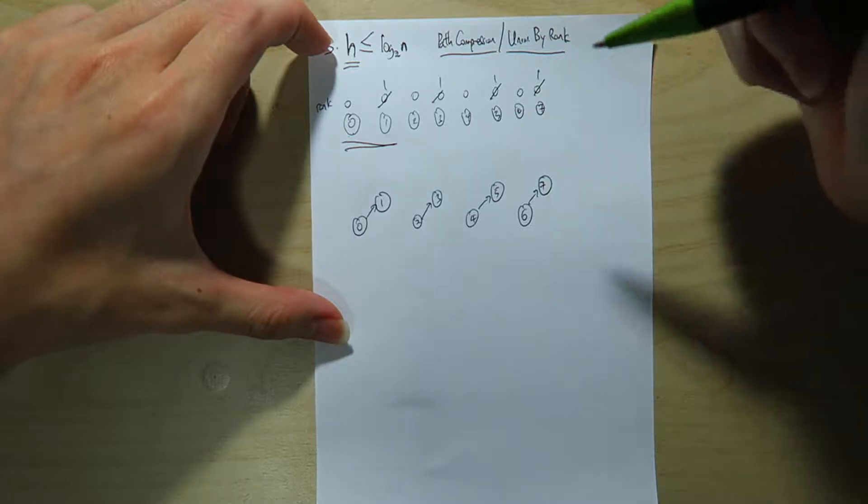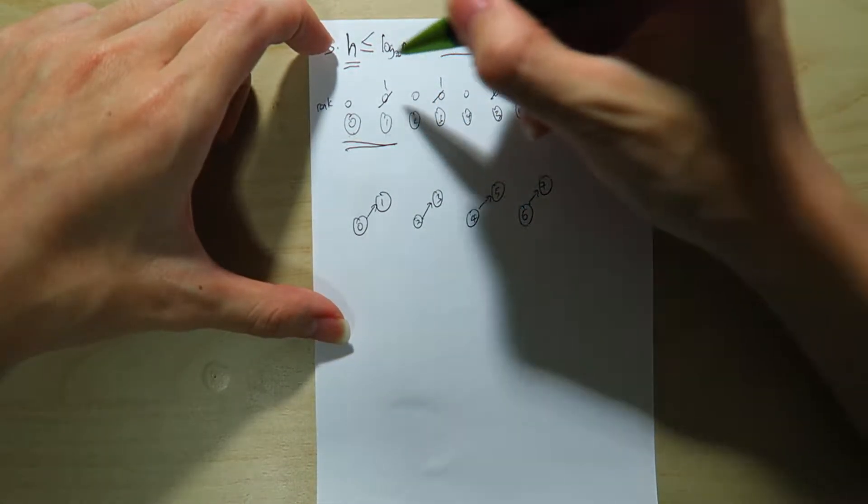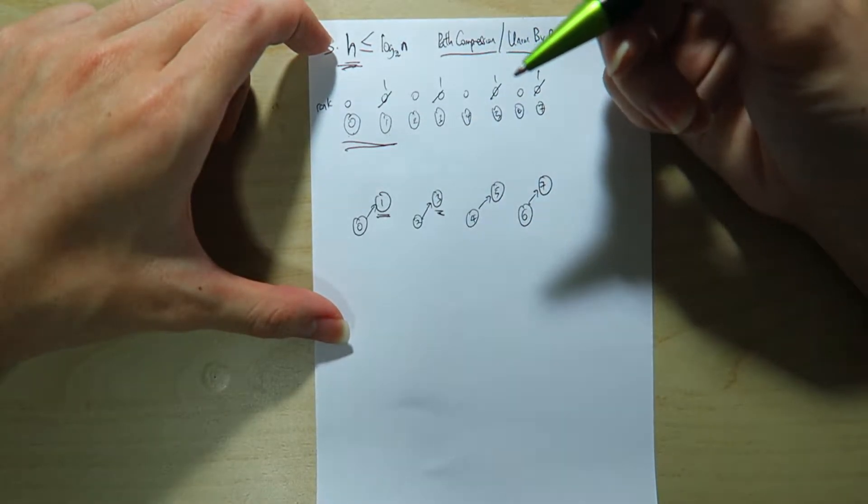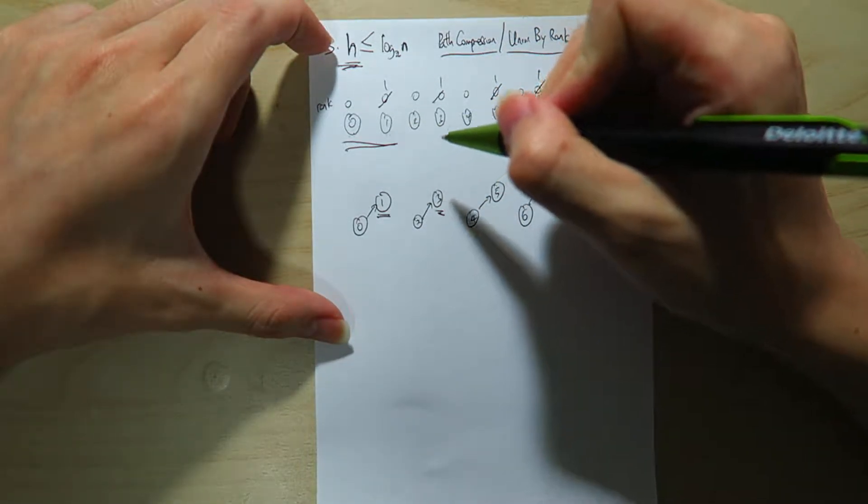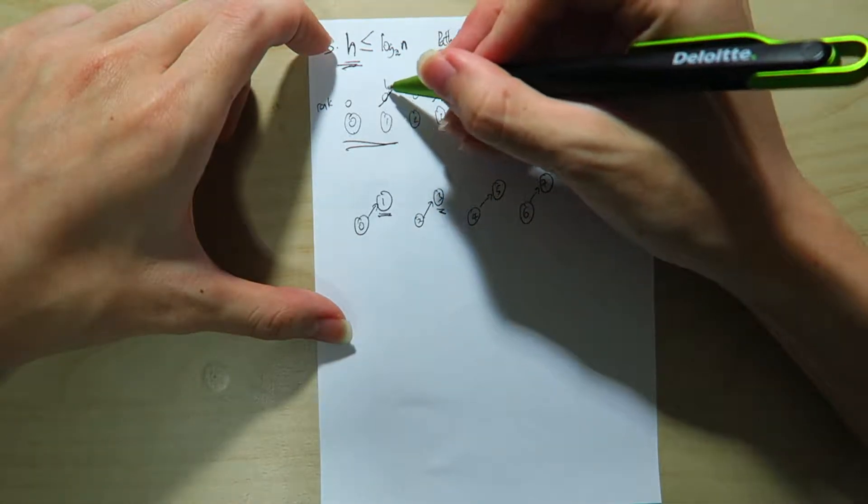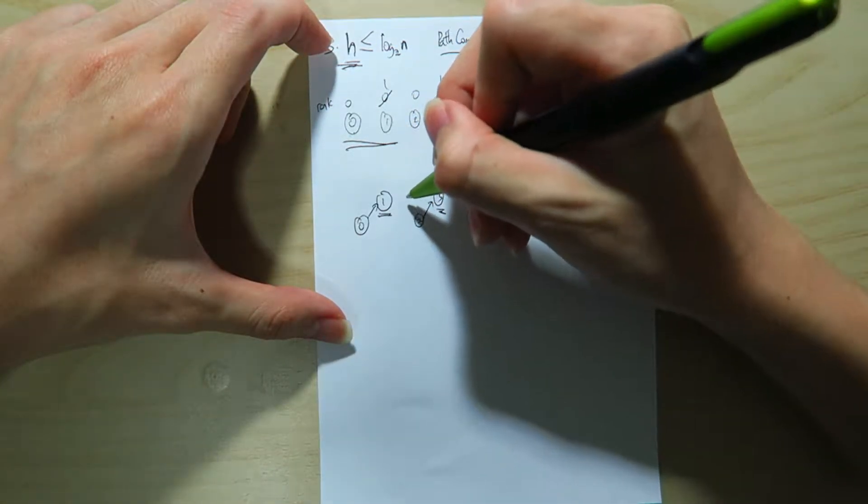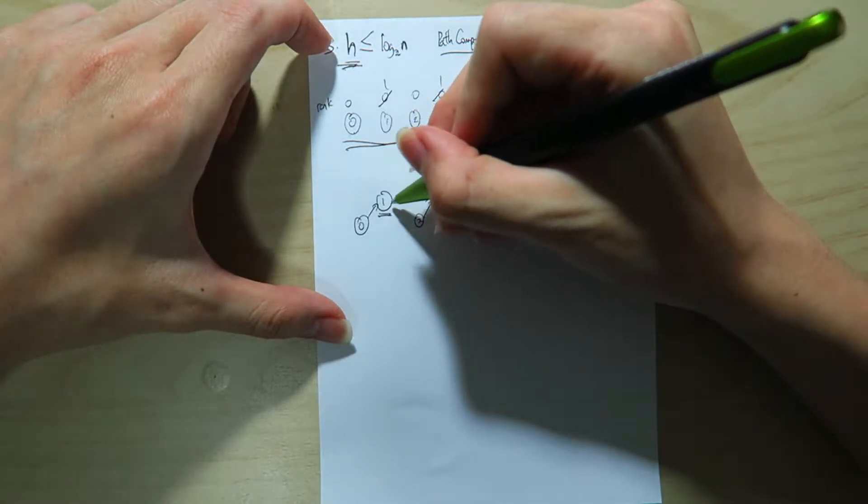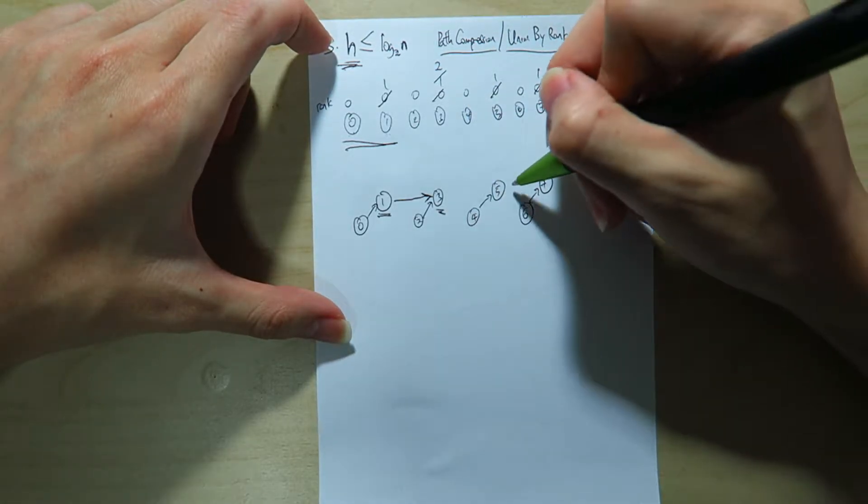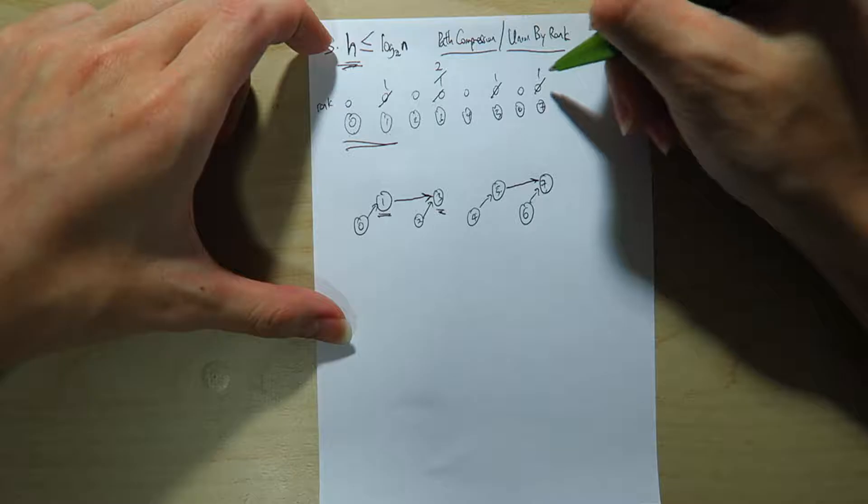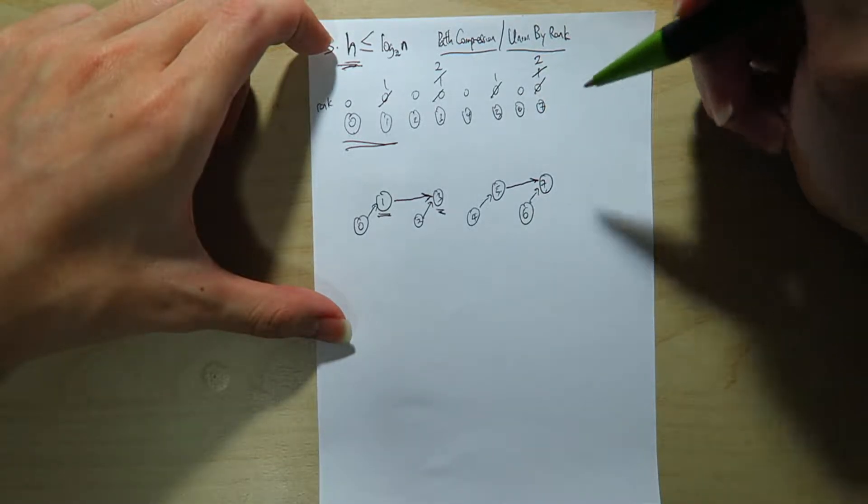And now what we're going to do is we have to be careful here. So if we want the maximum height, we need to union rank 1 and 3. Alright, so if we union rank 1 and 3, since the two of them have the same rank, we can just choose one of them. So let's say 1 points to 3, then the rank of 3 will become 2, and 5 points to 7, if we union rank 5 and 7, so this goes to 2.